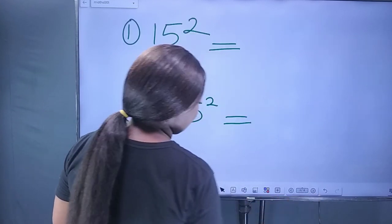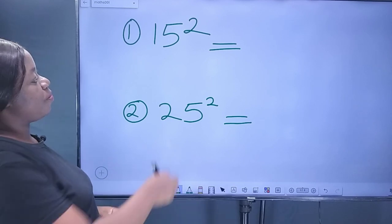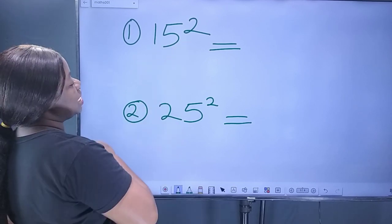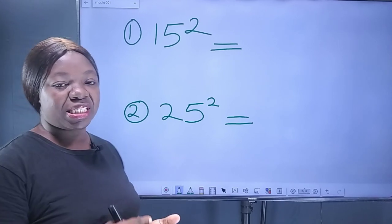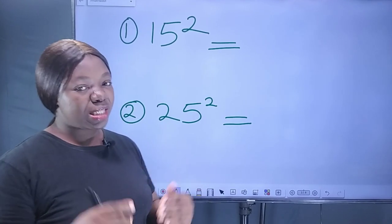So, let's move to the first example which says find the square of 15. Square of 15 is the same thing as 15 raised to the power of 2 which is the same as 15 times 15. So, what is the simple trick?